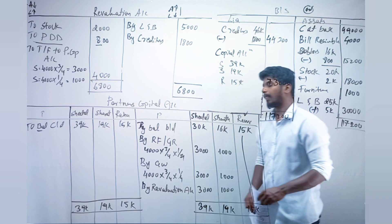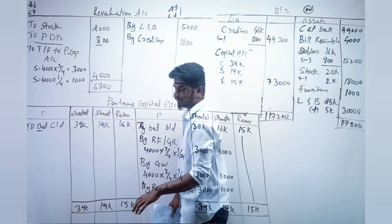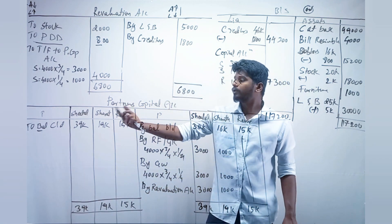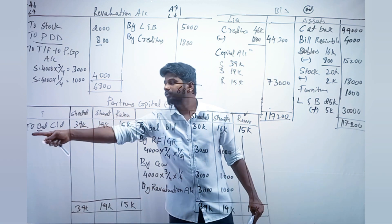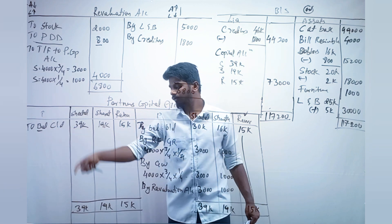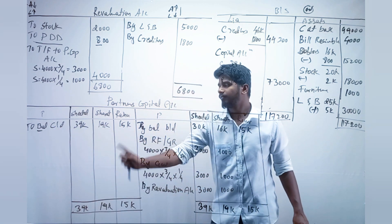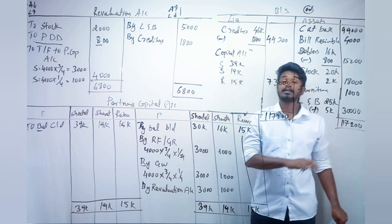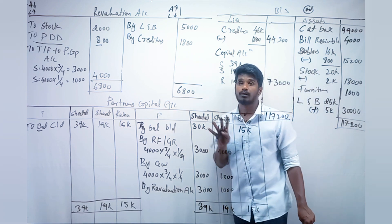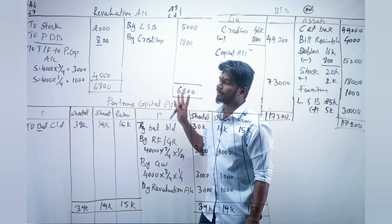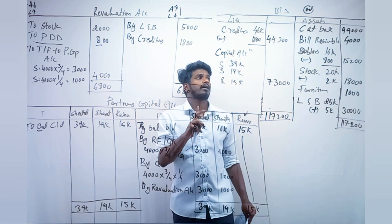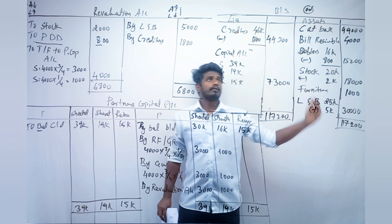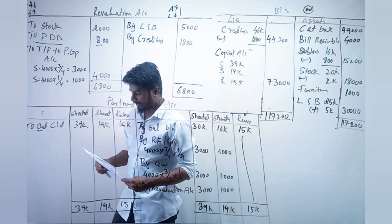The fourth item is the revaluation balance. Write it down, total it, and put the same total on the debit side as 'balance carried down.' Your partners capital account is ready.